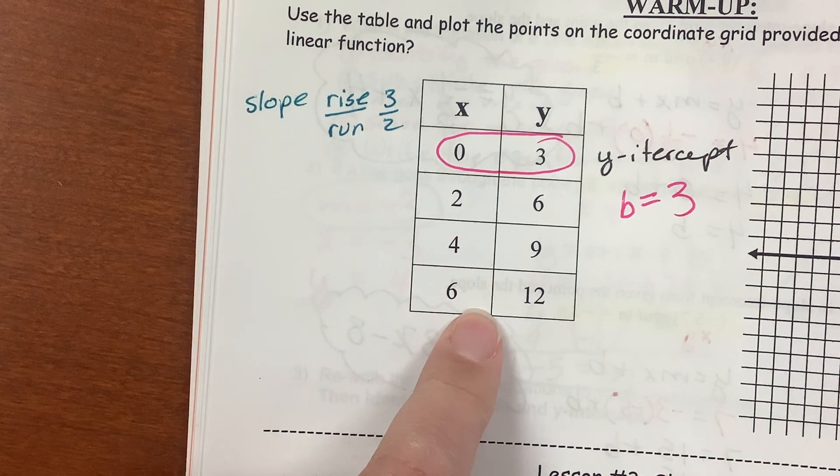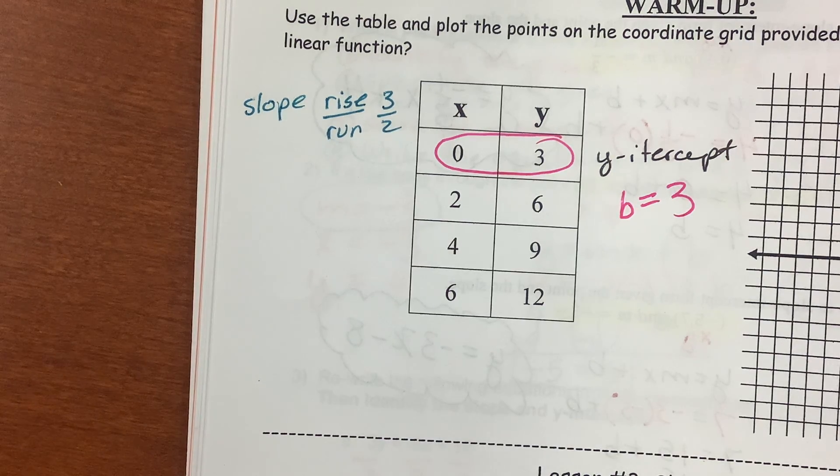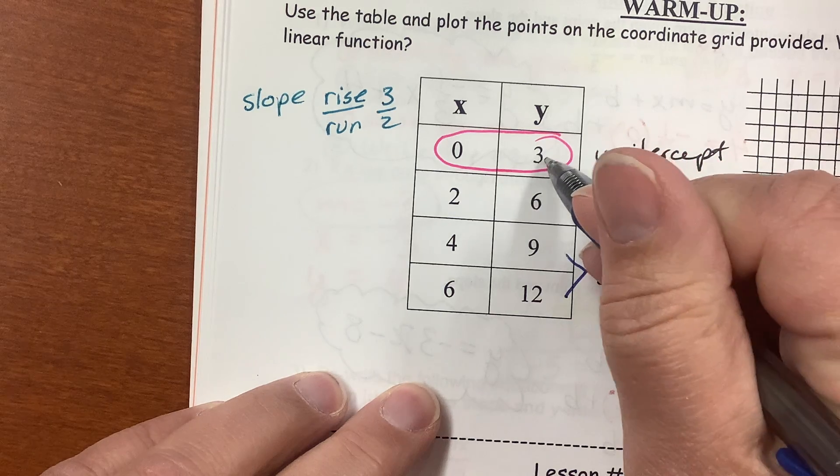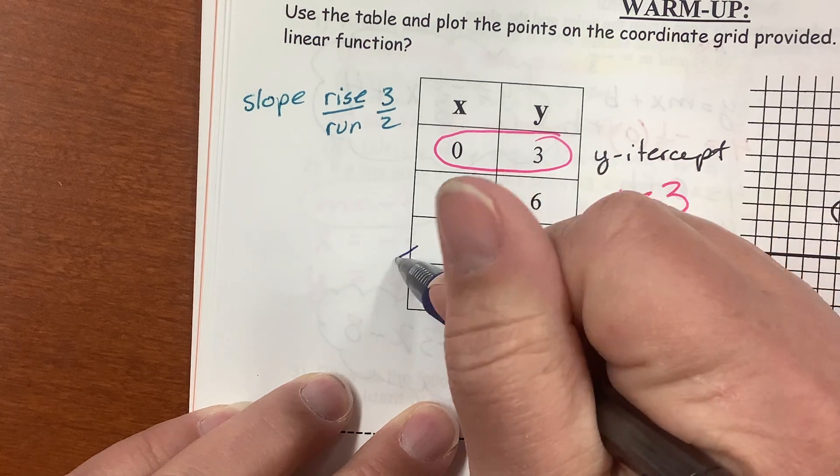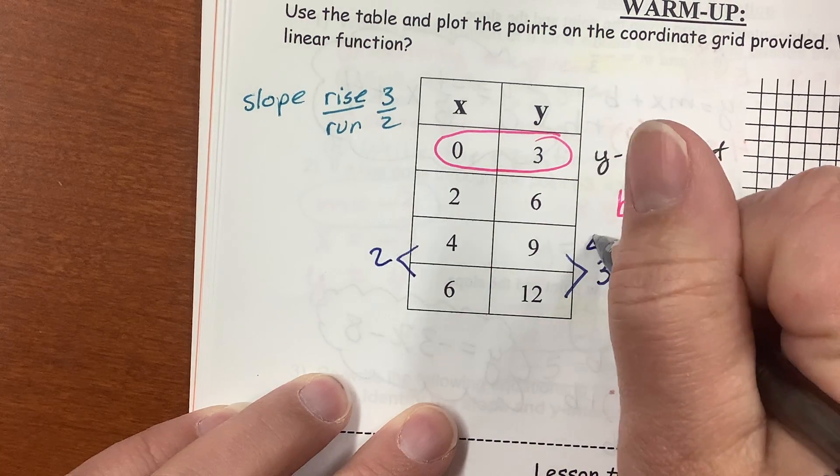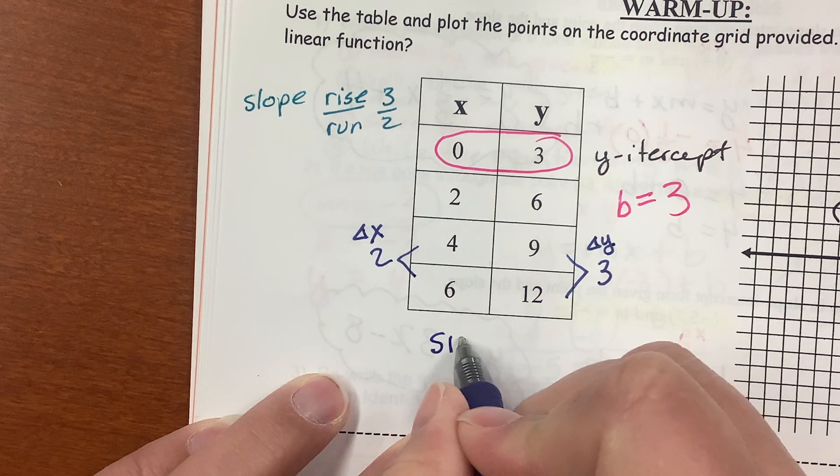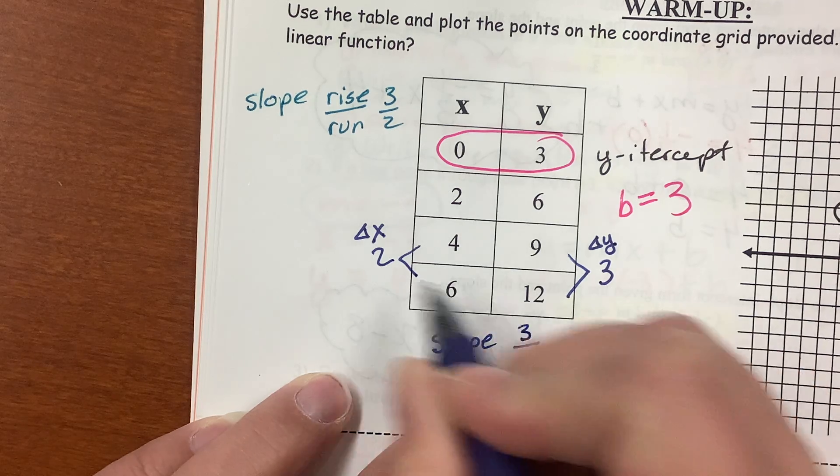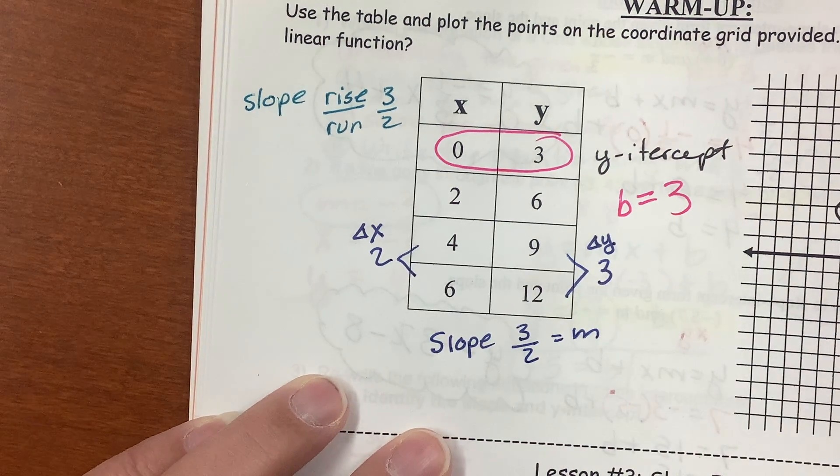Or, I could actually look at this grid and say, wait a second, there was another way to do this. The change in y. So, to get from 9 to 12, I have to add 3. As a matter of fact, 3, 6, 9, 12. Those all go up by 3. And 2, 4, 6. These all go up by 2. So, this is the change in y. And this is the change in x. And slope is also change in y, rise, over change in x, run. So, I still get rise over run, 3 over 2.